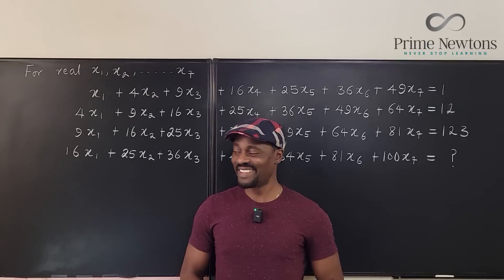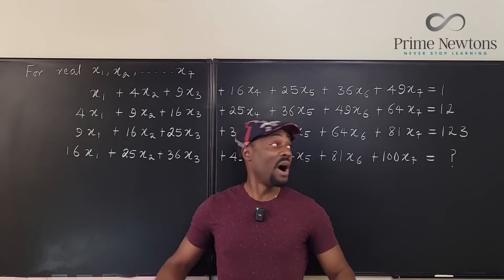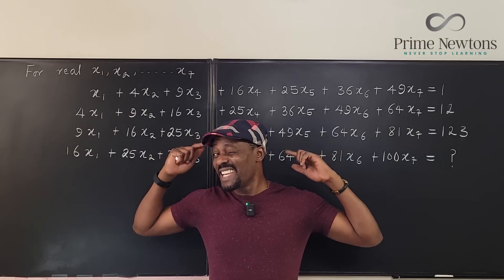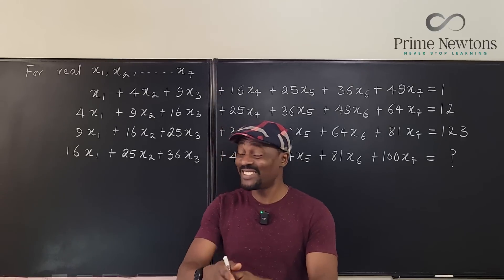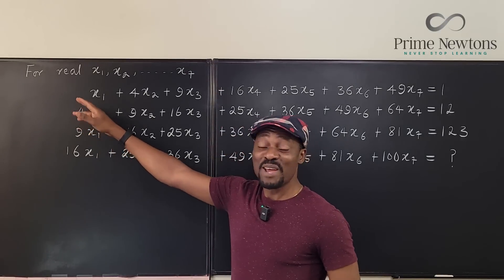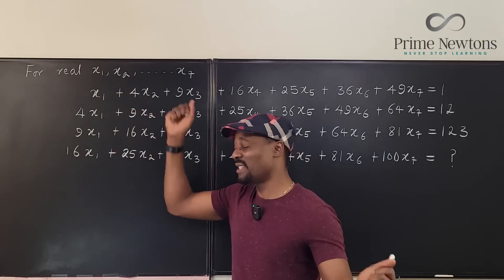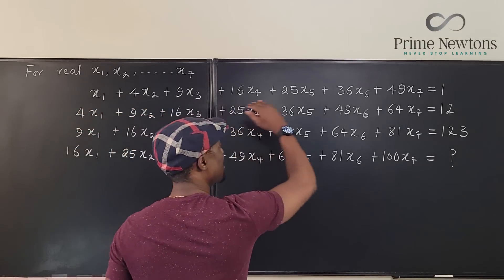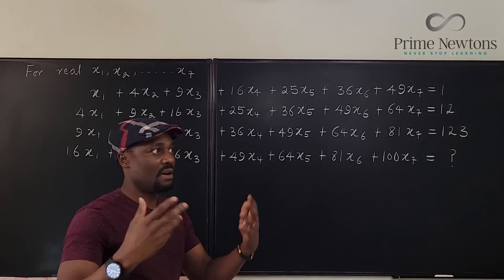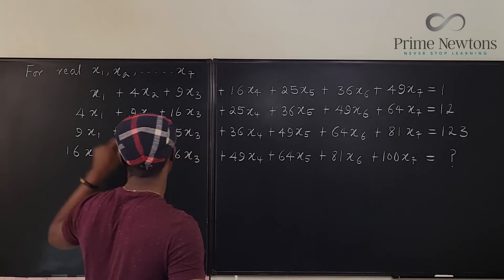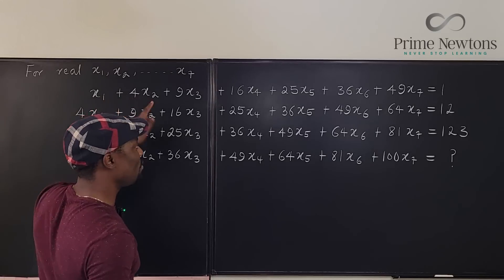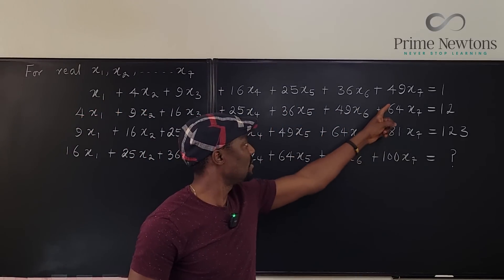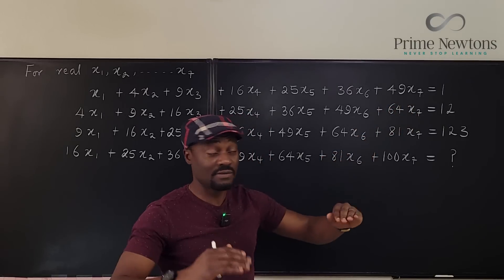Welcome to another video. We've got a very wide problem — as you can see on the board, it's taken over everywhere, and it's going to take over your mind because you've got to think about this. We have x1, x2, x3, x4, x5, x6, x7 — all real numbers forming this chain of quantities. Starting from 1x1 plus 4x2, all the coefficients are perfect squares up to 49x7, and if you add everything, you get 1.